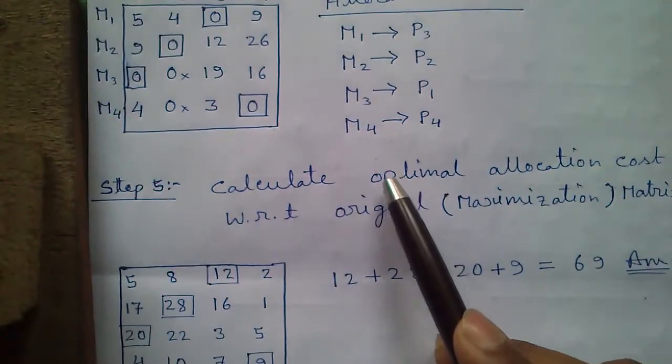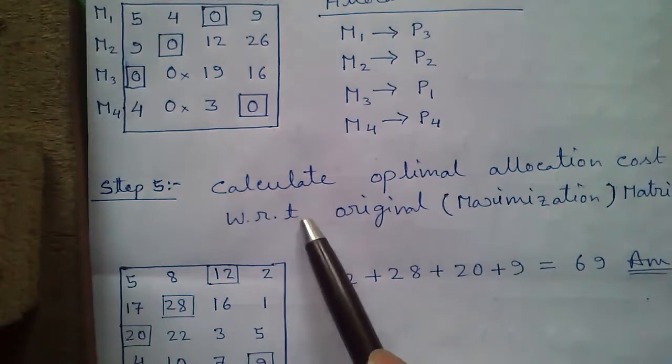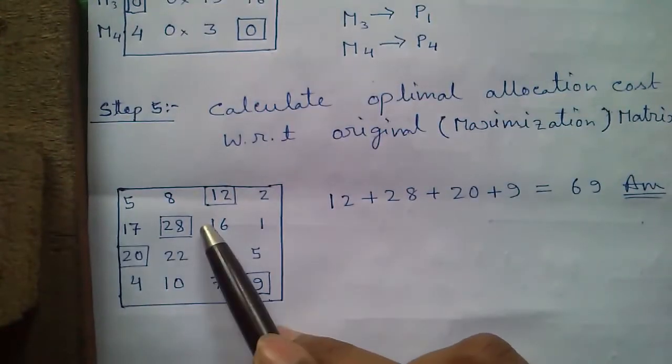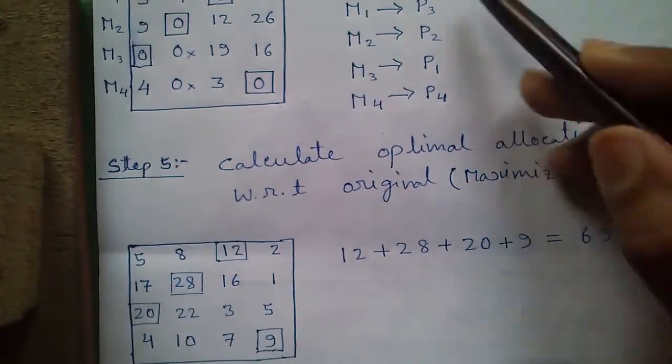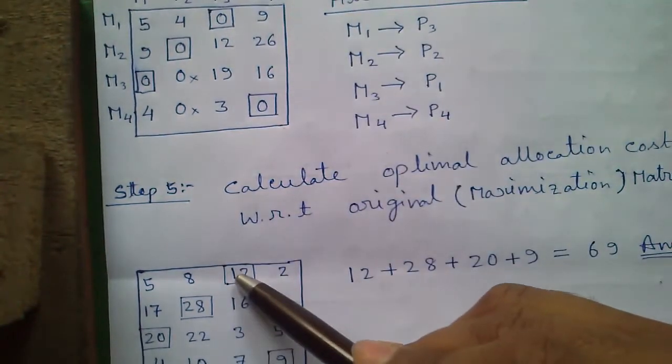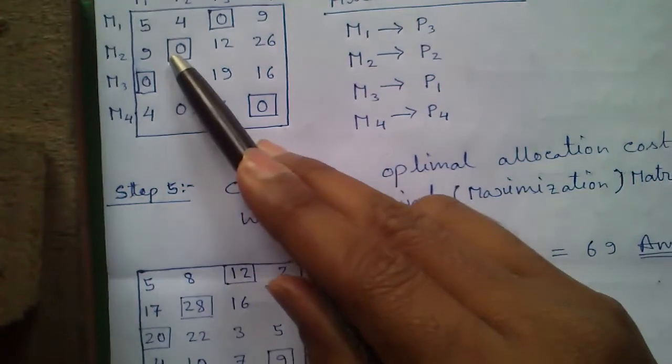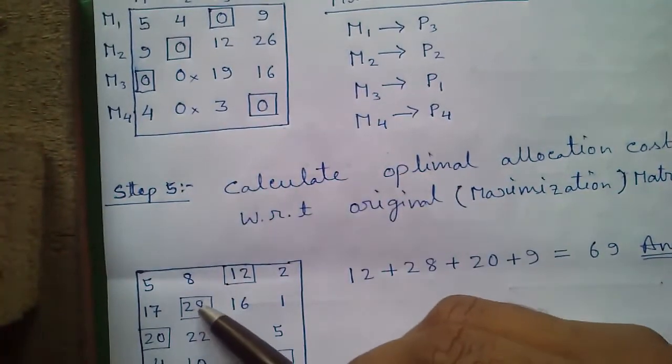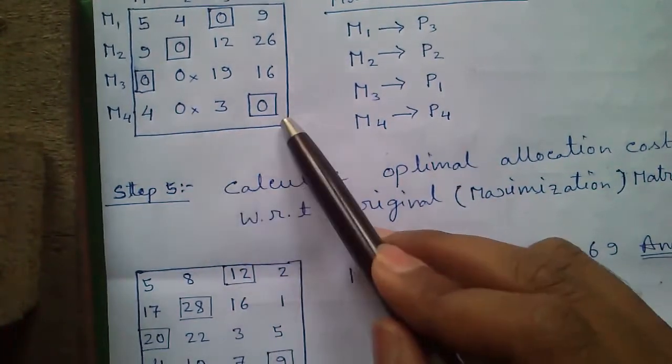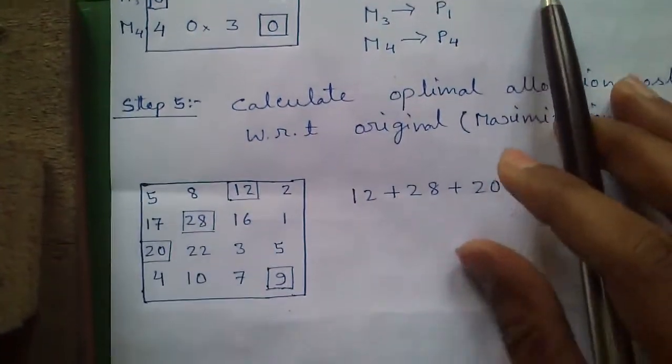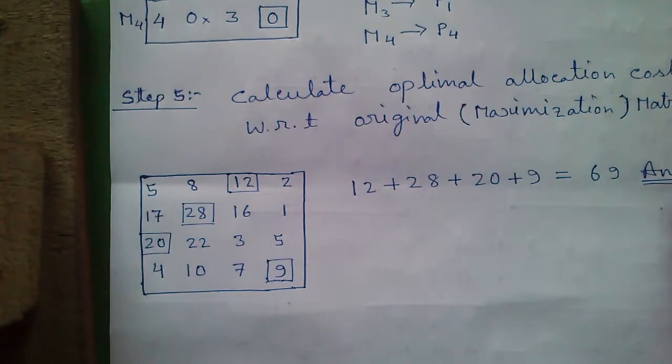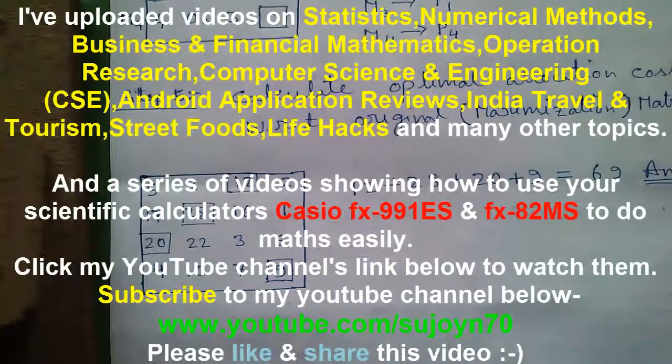Step 5 is our final step. Calculate the optimal allocation cost with respect to our original maximization matrix. Here I have written the original matrix. In original matrix, in M2P3 position we had 12. So 12 plus in M2P2 position we had 28, plus in M3P1 position we had 20, and M4P4 position we had 9. Adding all these you will get 69, our optimal allocation cost.